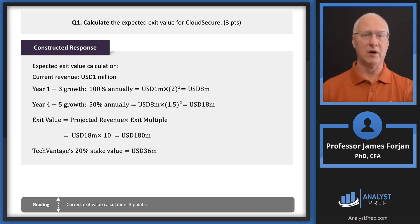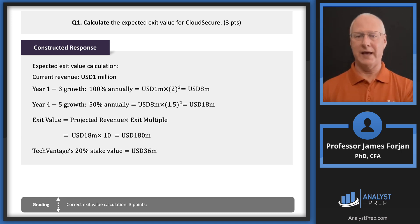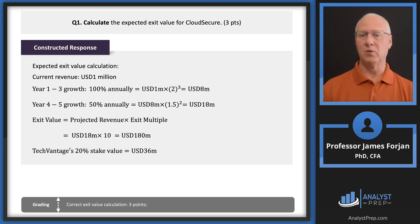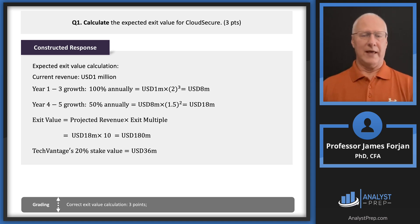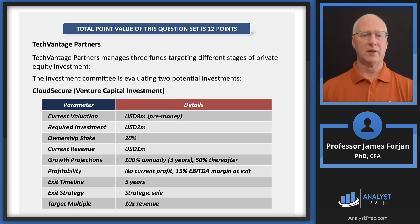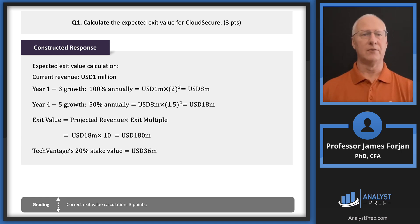You can use your financial calculator: set $1M as present value, three periods, zero payment, 100% interest rate, and solve for future value. Either way you get $18 million. Then apply the 10x exit multiple: 10 times $18 million equals $180 million. We were given a 20% ownership stake, so multiply by 20% to get $36 million as our expected exit value.